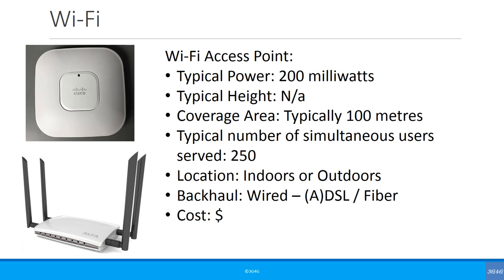Comparing to Wi-Fi: a Wi-Fi access point typically has 200 milliwatts power or even less, is generally deployed indoors, has a coverage radius of roughly around 100 meters, and can serve around 250 users simultaneously. It can be indoors or outdoors, with wired backhaul — DSL, ADSL, or fiber. Cost is far cheaper compared to a macro cell.